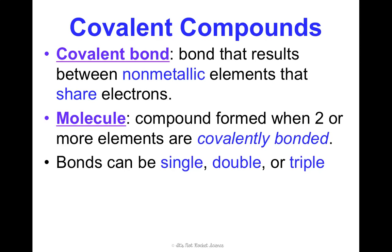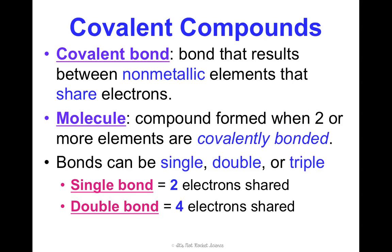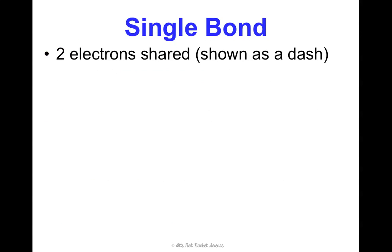Covalent bonds are either single, double, or triple. A single bond forms when only two electrons are shared. A double bond forms when four electrons are shared. So what do you think a triple bond is? Six electrons shared. I want to show you with a drawing an example of a covalent compound that uses each type of bond.